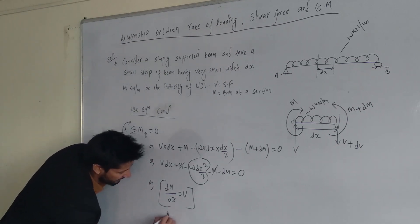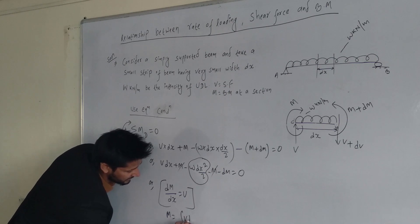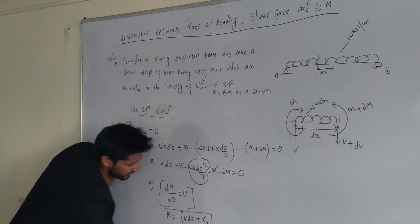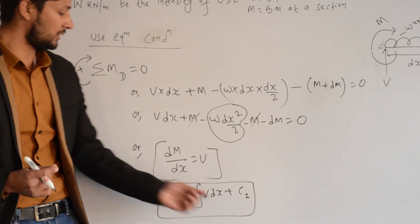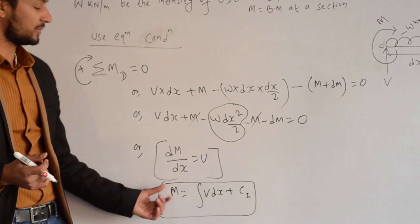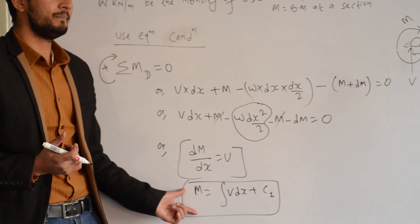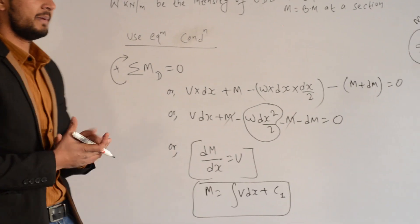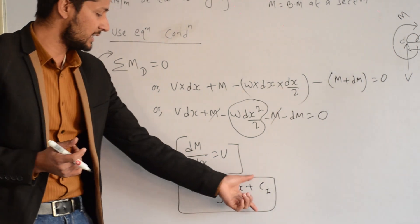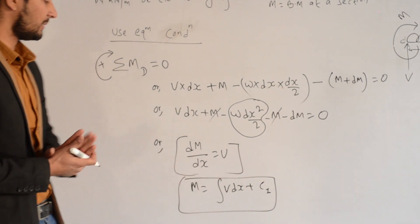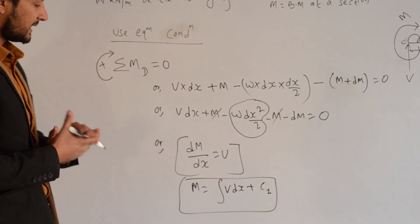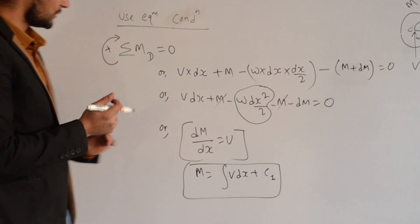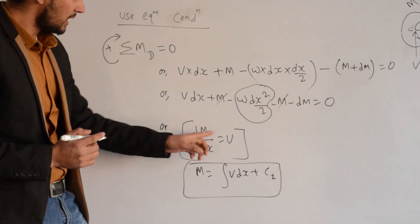Therefore M = ∫V dx + C1. This means the bending moment equals the area under the shear force diagram.